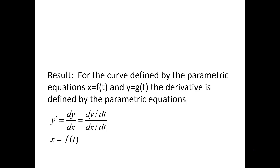The derivative function associates with each input x an output, which is the slope of the tangent line. If you have a curve defined by parametric equations x equals f of t and y equals g of t, we find dy/dx by taking dy/dt and dividing it by dx/dt. So the y's go on top and the x's go on the bottom.